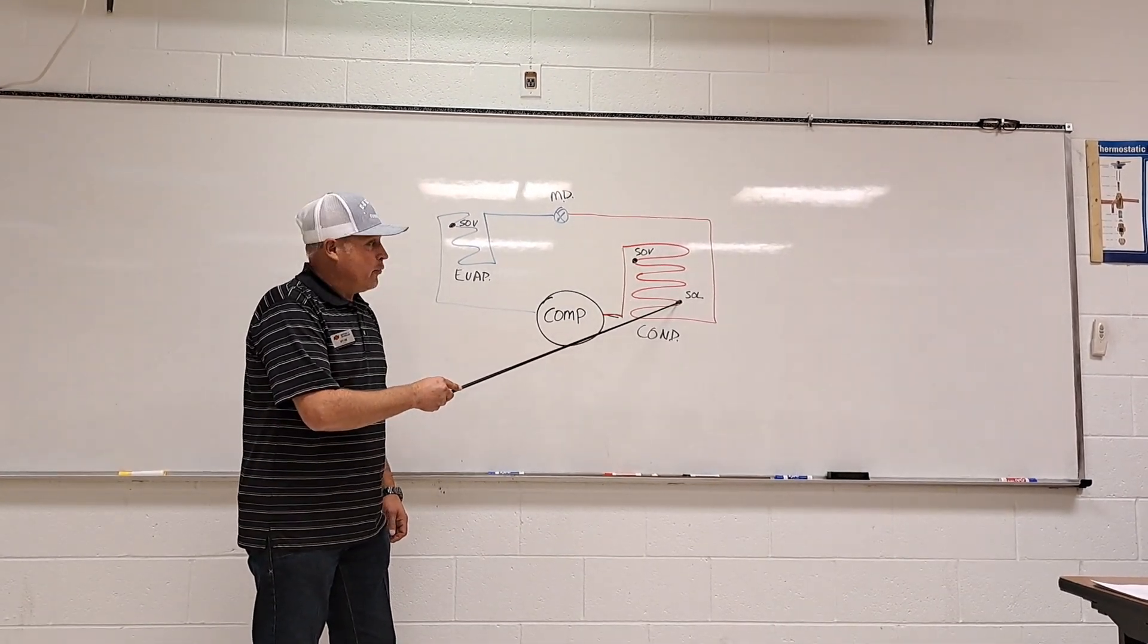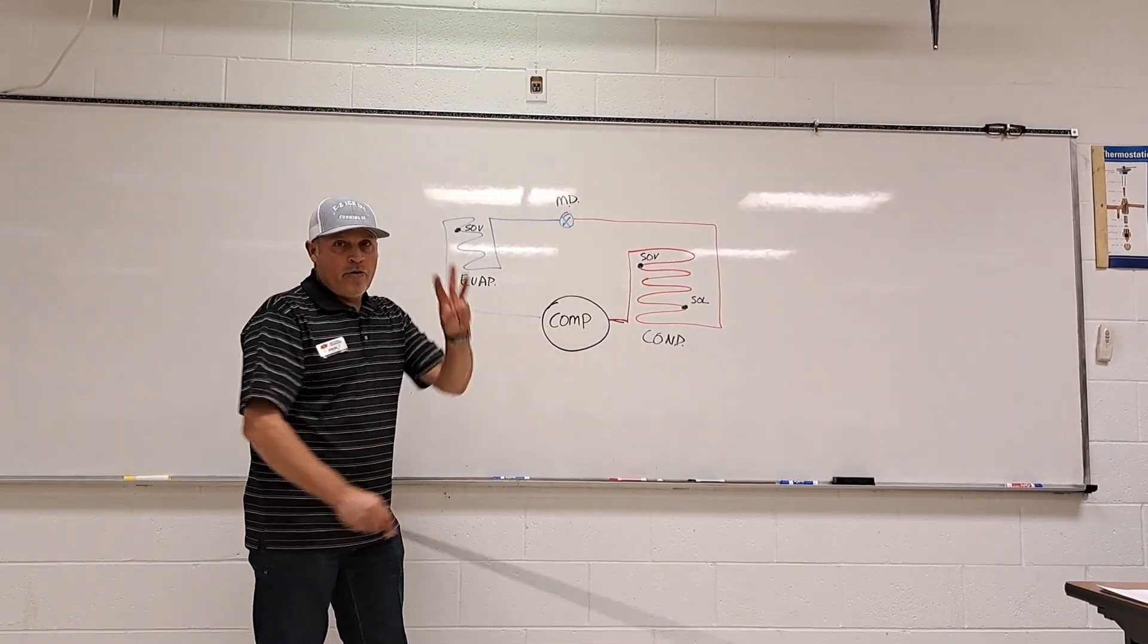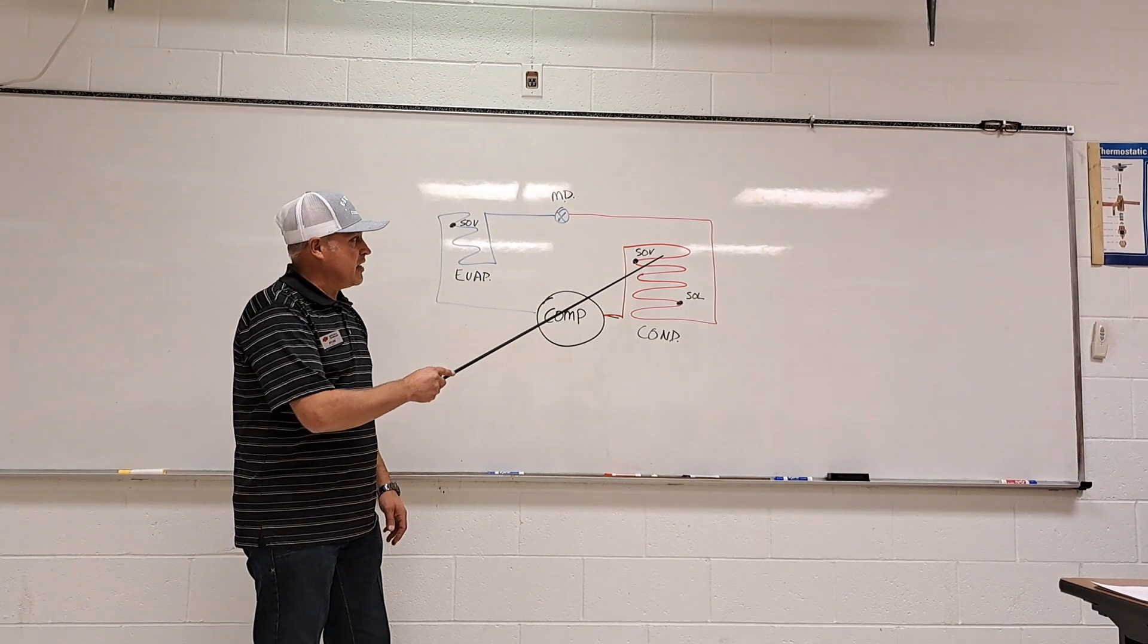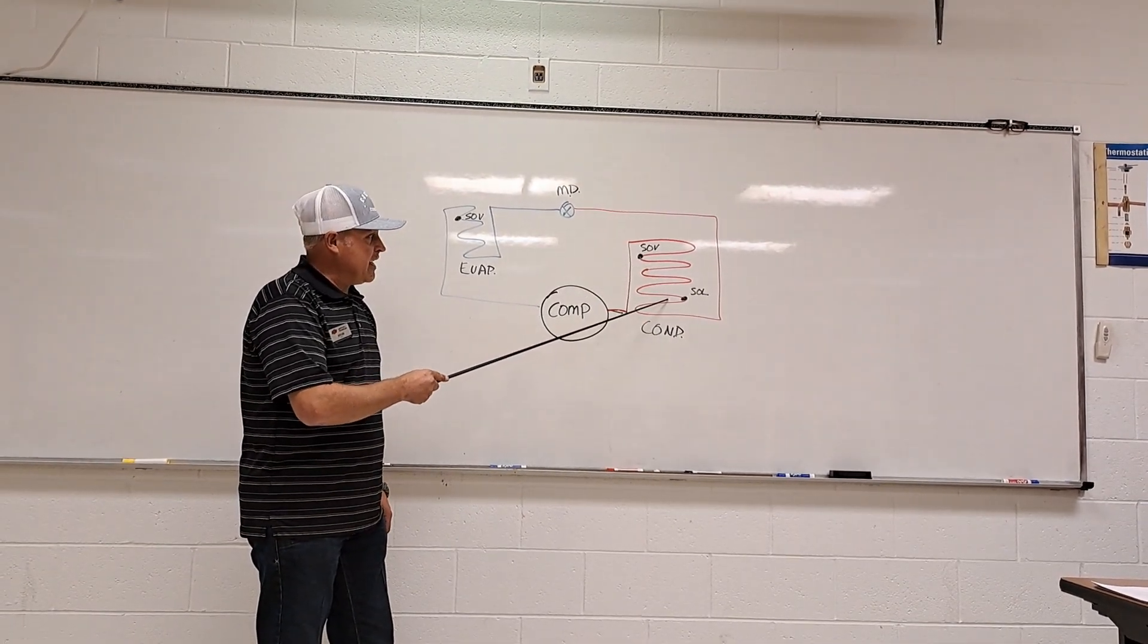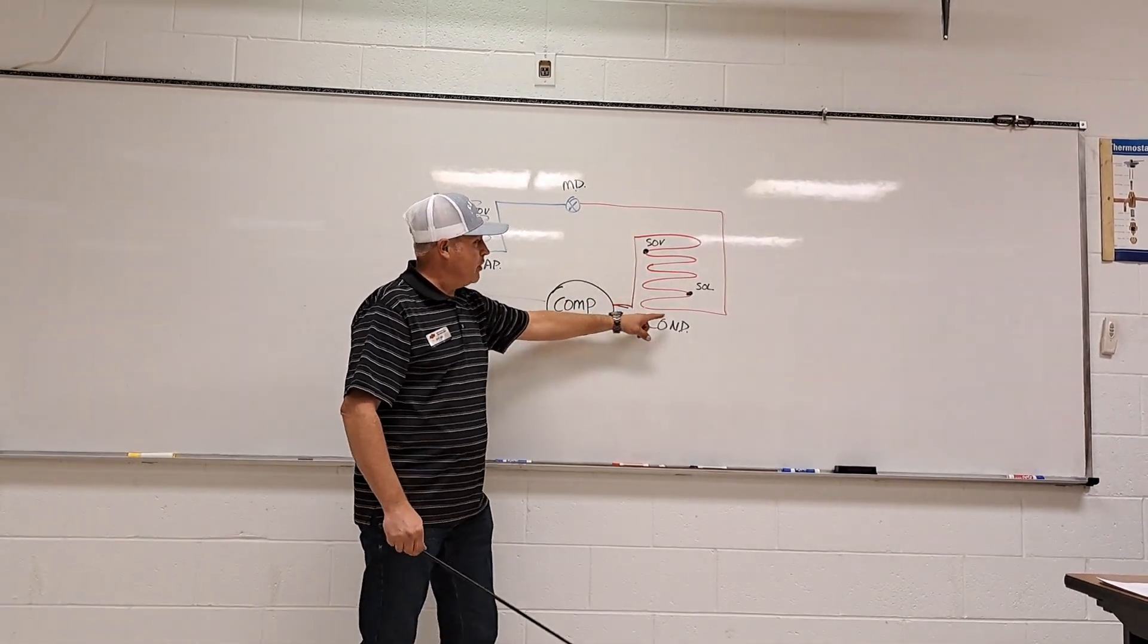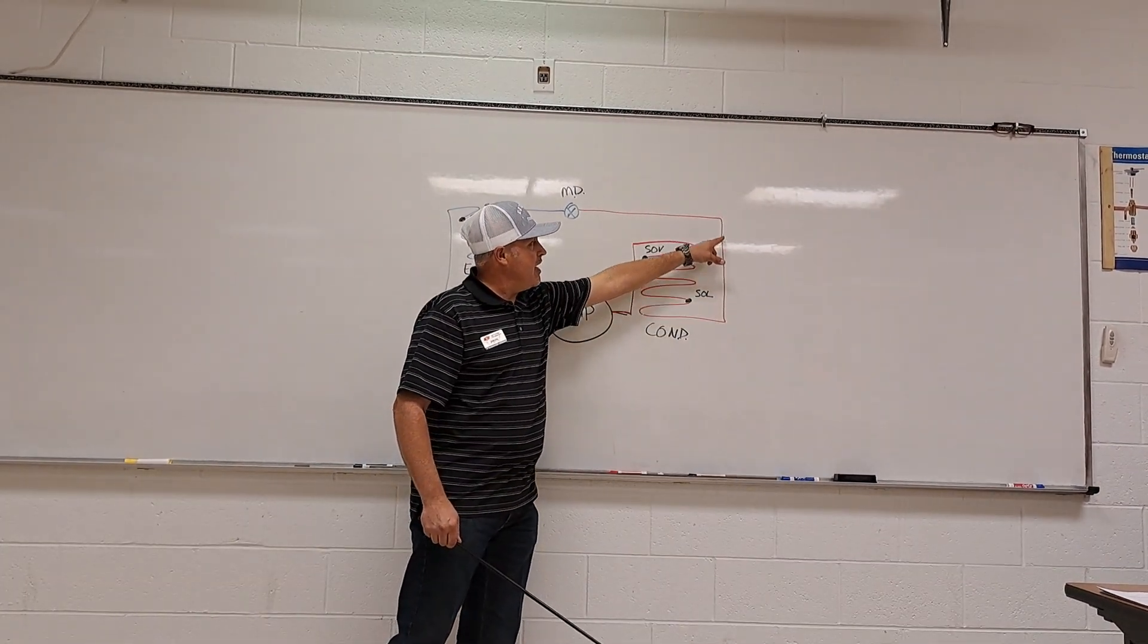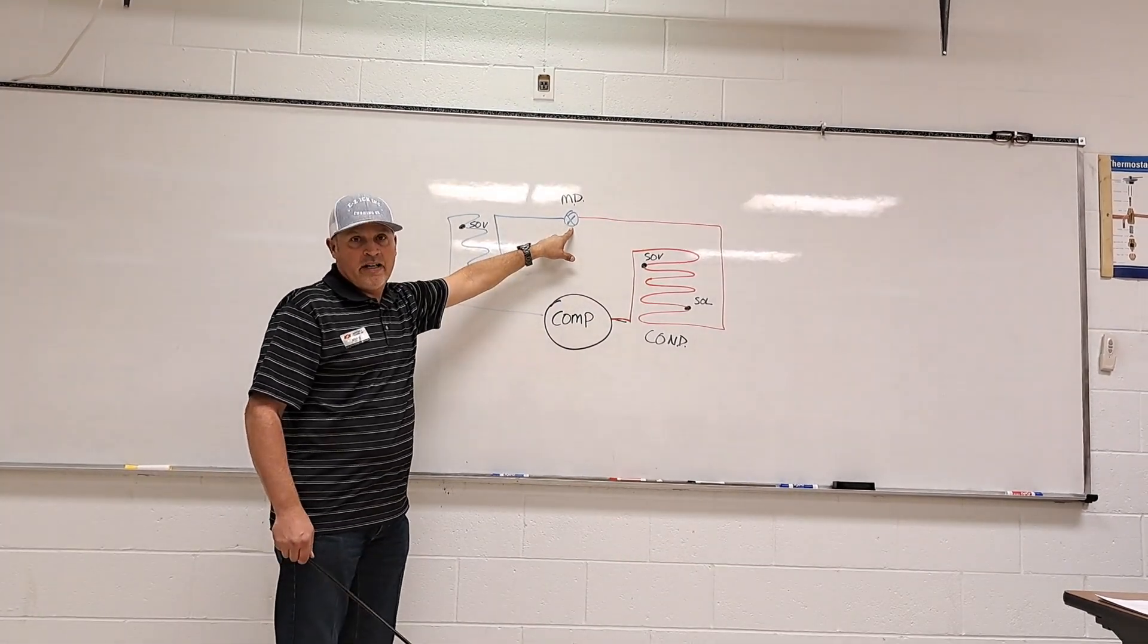We subcool out of the bottom of the condenser into the liquid line. Three things happen in the condenser: desuperheating, condensing, and subcooling. We continue subcooling through the liquid line, 100% liquid, until we reach the metering device.